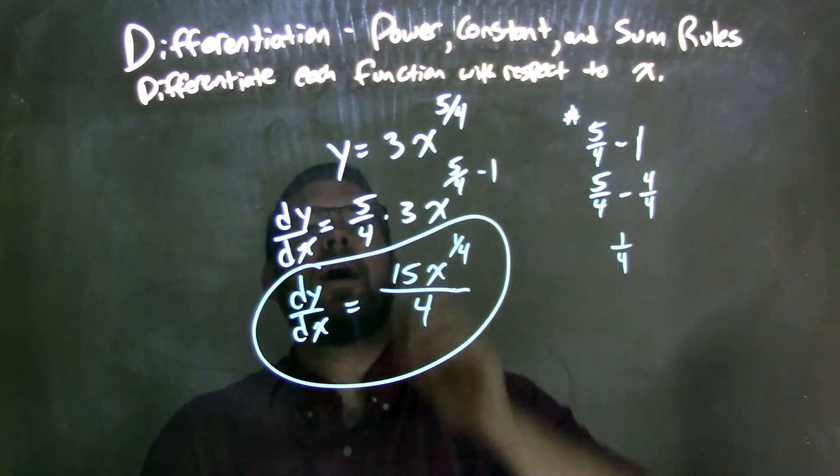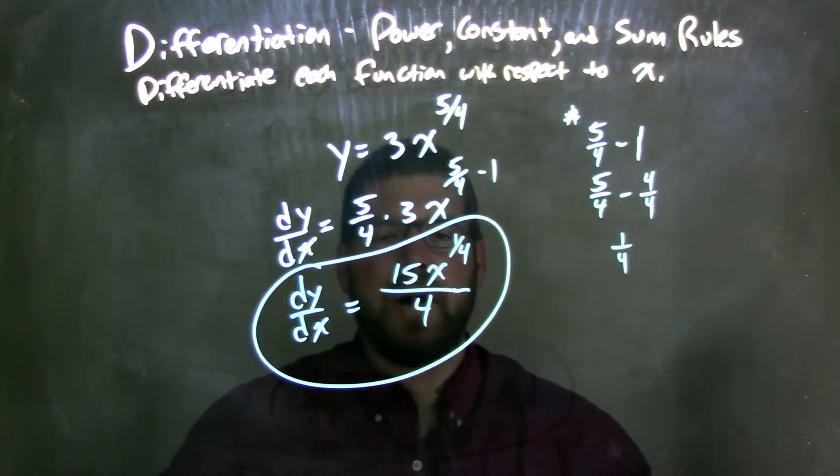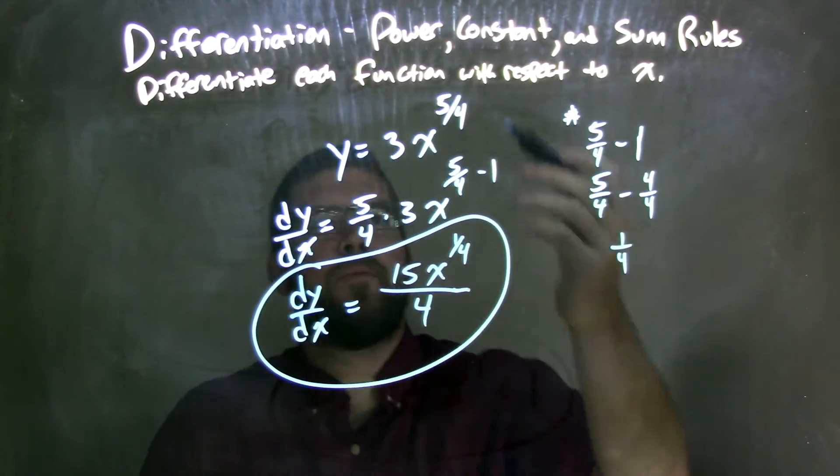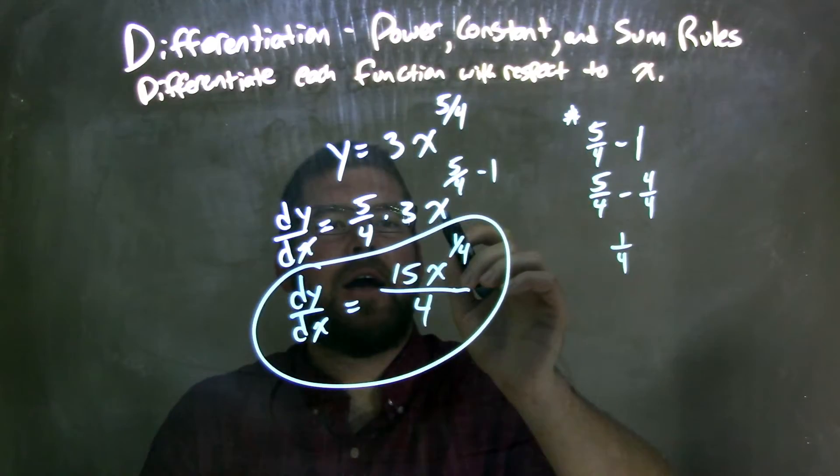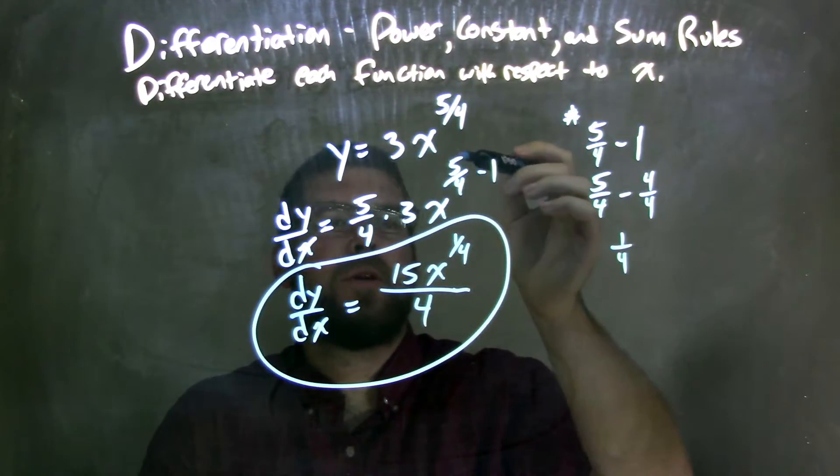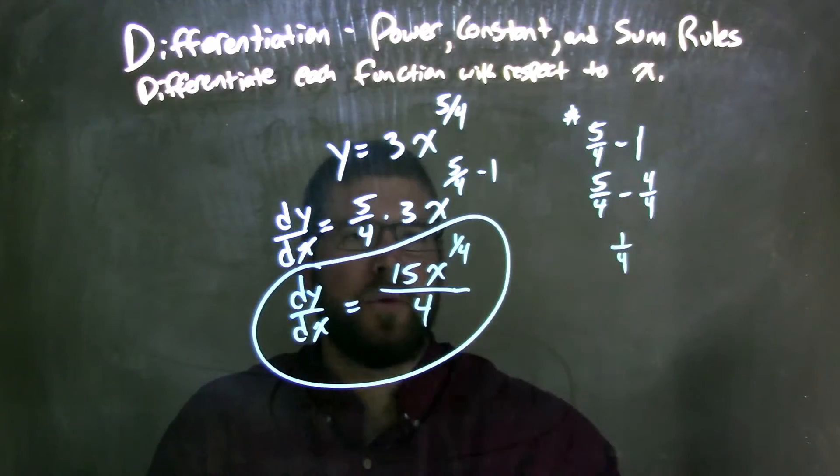So let's recap. We're given y equals 3x to the 5/4 power. I used a classic power rule here. 5/4 comes down, I multiply it by 3x, and we raise that power, it's 5/4 minus 1, also subtract 1 from it.